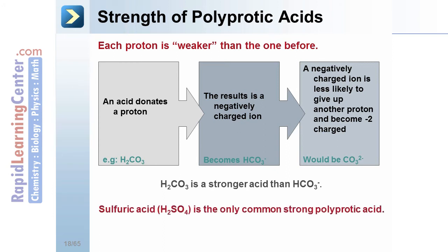Sulfuric acid, H2SO4, is the only common strong polyprotic acid. However, the first hydrogen is strong, but the second one is weak.